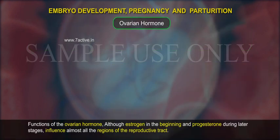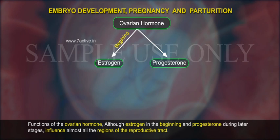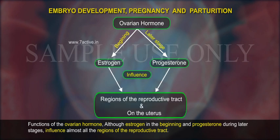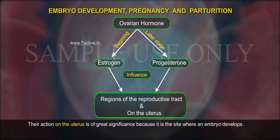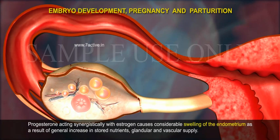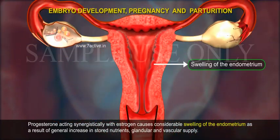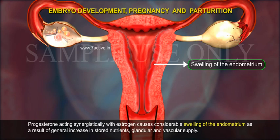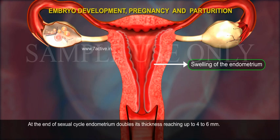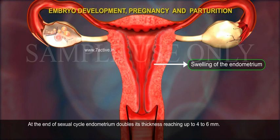Although oestrogen in the beginning and progesterone during later stages influence almost all the regions of the reproductive tract, the reaction on the uterus is of great significance because it is the site where an embryo develops. Progesterone acting synergistically with oestrogen causes considerable swelling of the endometrium as a result of a general increase in stored nutrients, glandular and vascular supply. At the end of the sexual cycle, the endometrium doubles its thickness, reaching up to 4-6 mm.